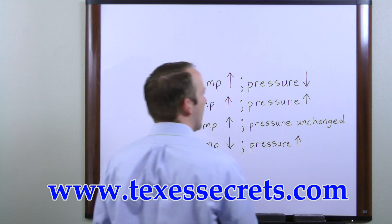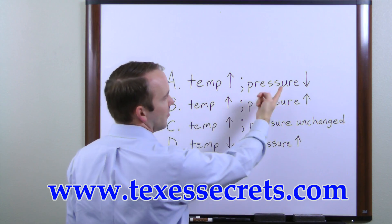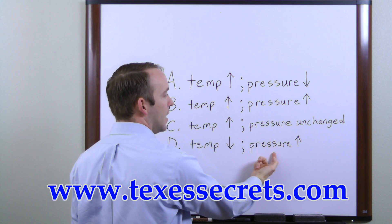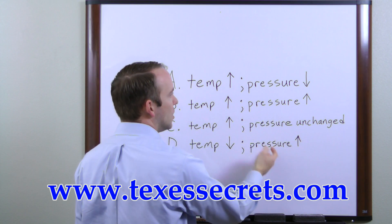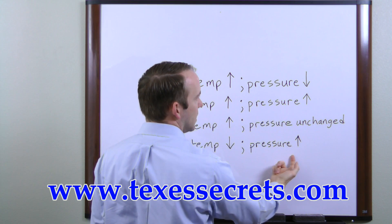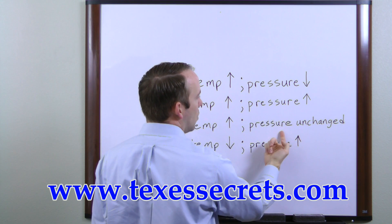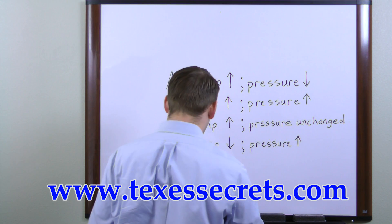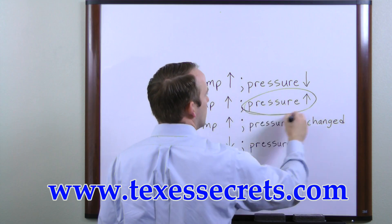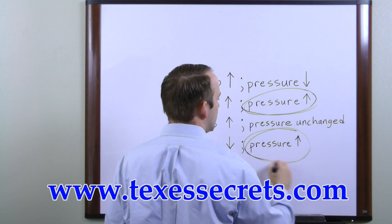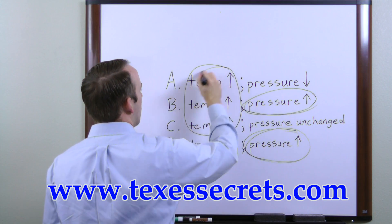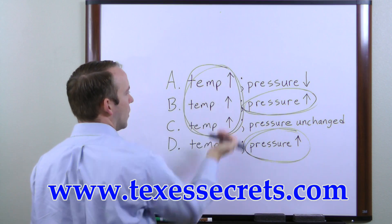Now let's look at the other half of this — what's going on with pressure? We have pressure going down, pressure going up, pressure stays unchanged, and pressure going up. So out of the four choices, two of them have pressure increasing, one has pressure going down, and one has pressure being unchanged. Again, if you were just guessing, you would say the answer was probably going to be one of those two with pressure increasing. And looking back, the answer is likely one of the three that have temperature going up.